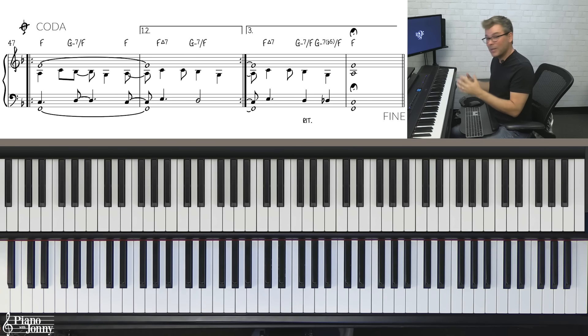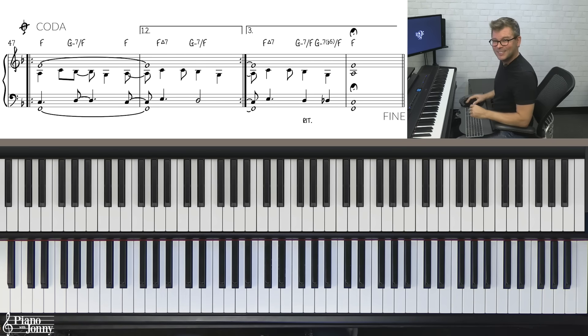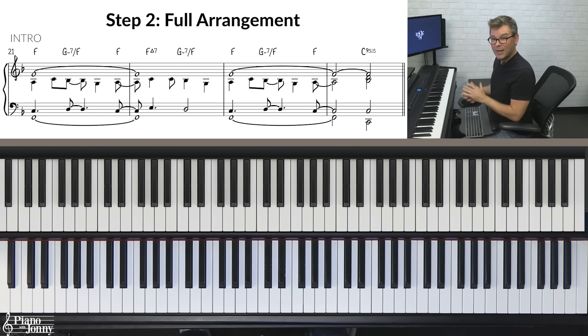So I think next, what we're going to do, we're going to play this whole arrangement with the track. That's next. All right. So we're going to play the arrangement with the track now. We're going to start with the intro. We'll play letter A, letter B. We'll take the DS back to letter A, and then take the two coda sign, and go to the coda and end. So it's going to be so much fun. Can't wait. Here we go.